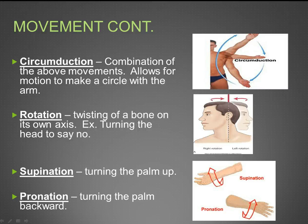Next is circumduction, which is a combination of the above movements, allowing motion to make a circle with the arm. Think of 'circum' meaning circle or around. Next is rotation, the twisting of a bone on its own axis — for example, turning the head to say no, shaking your head from left to right.